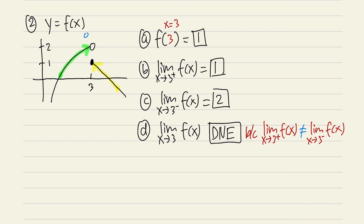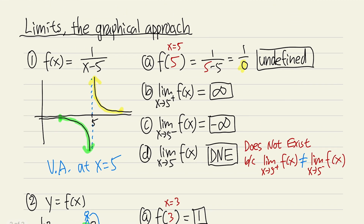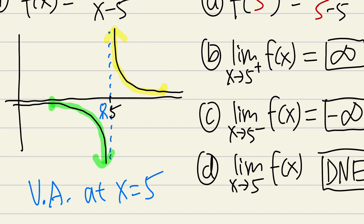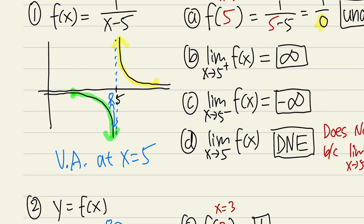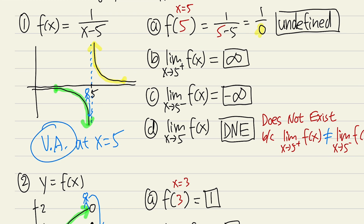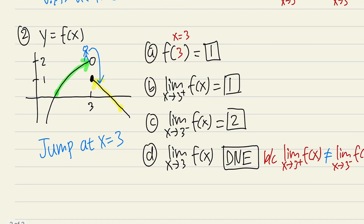Imagine Super Mario standing on the curve — he would have to jump down, so we call this a jump discontinuity. It is a jump at x = 3. You might wonder: isn't the vertical asymptote case also a jump? The difference is that a vertical asymptote involves infinity or negative infinity, while a jump discontinuity goes from one finite y value to another finite y value — finite to finite is a jump.